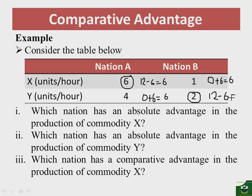From this analysis, we can clearly see that nation A gains two units of commodity Y compared to its pre-trade situation. What will be the gains for nation B?